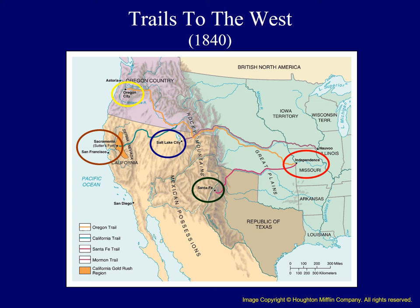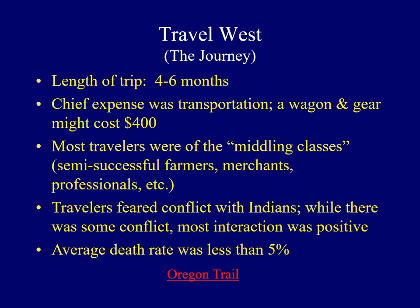The most common jumping-off point was Independence, Missouri, circled in red on the map. Depending upon the traveler's destination, the trails would taper off as one might journey to Santa Fe, Salt Lake City, Sacramento, or even Oregon City. Life on these trails was rough. The biggest fear for many settlers was that of an Indian attack; however, the reality was that most interaction with Native Americans was quite positive. The journey was only moderately dangerous, as the average death rate was less than 5%. The biggest killers were disease and accidents.